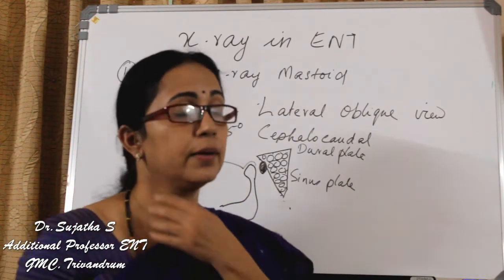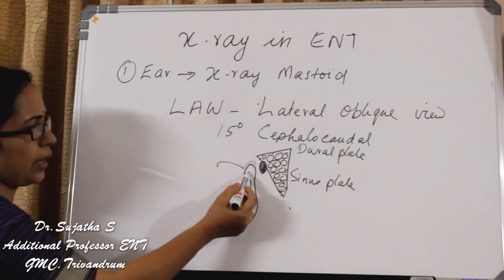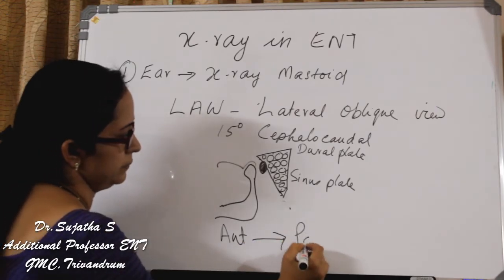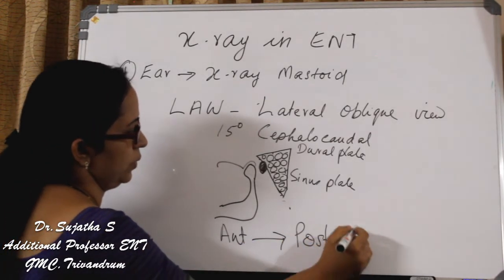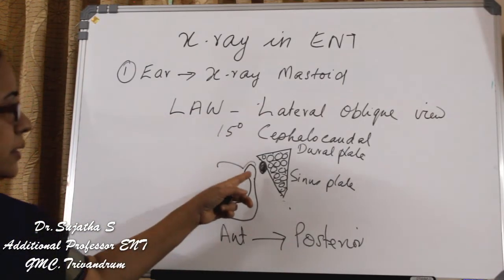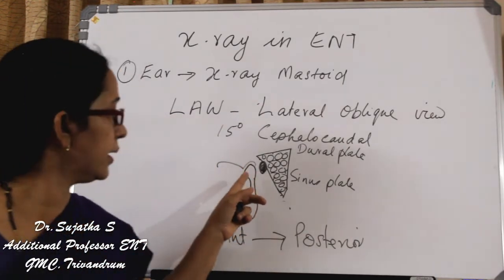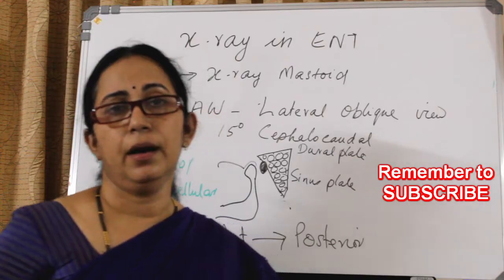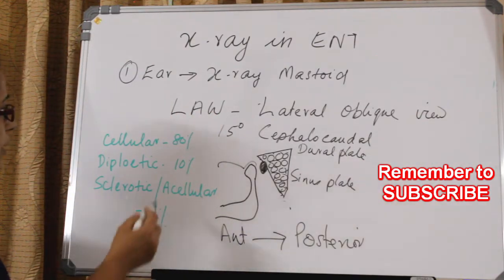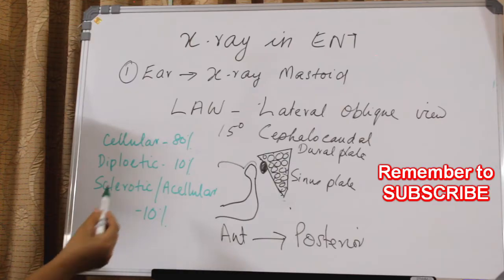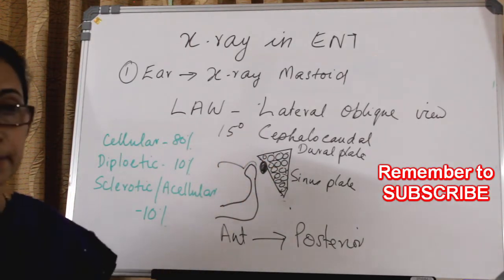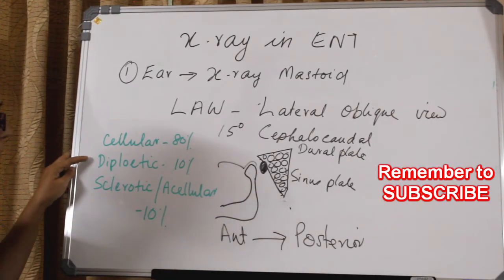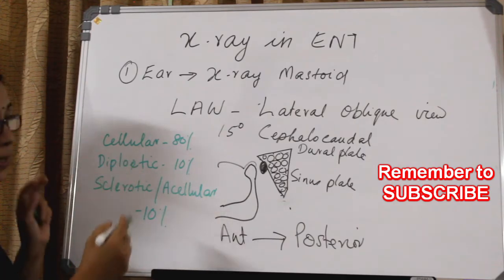I will now show you the X-ray mastoid. From anterior to posterior: temporomandibular joint, then the air in the external auditory canal, and then the mastoid air cells. In the population, there are three types of mastoid pneumatization. Most commonly, 80%, it is cellular — you can see all the mastoid air cells clearly, highly cellular or well pneumatized.